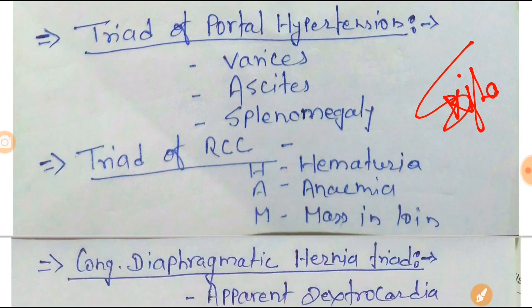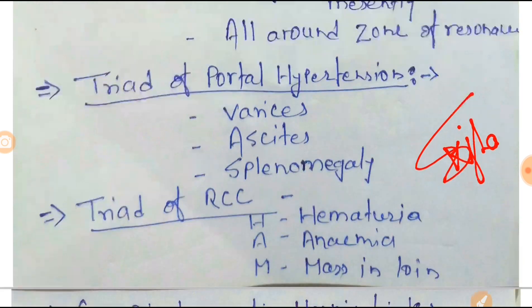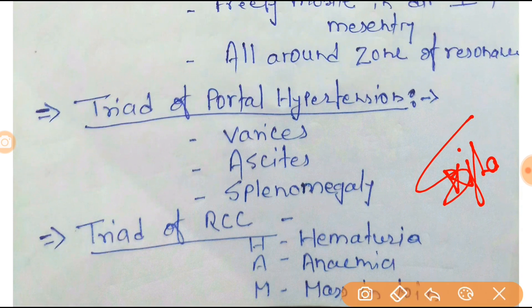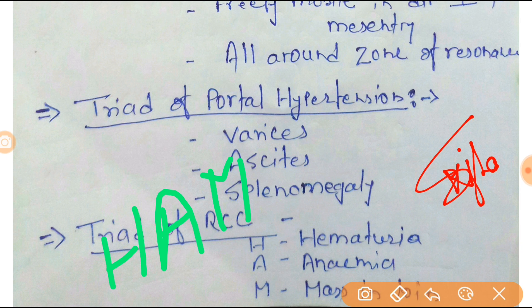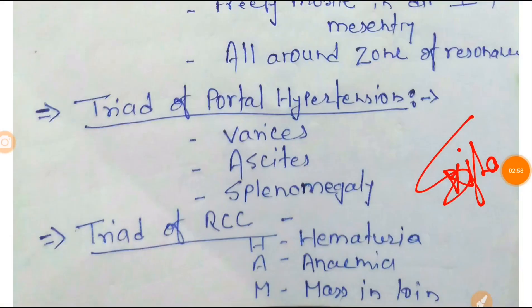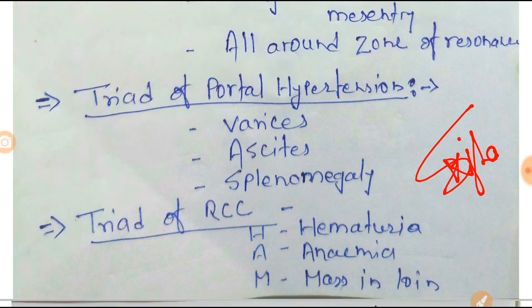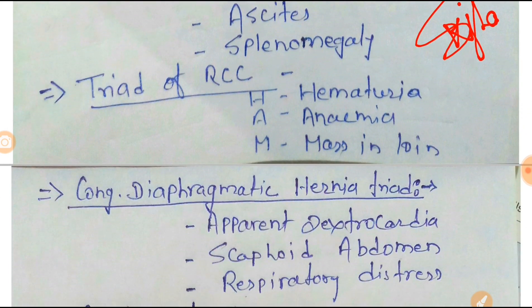Next one is the Triad of RCC — renal cell carcinoma. The trick is HAM: H for hematuria, A for anemia, and M for mass in the loin. That is the triad of renal cell carcinoma.